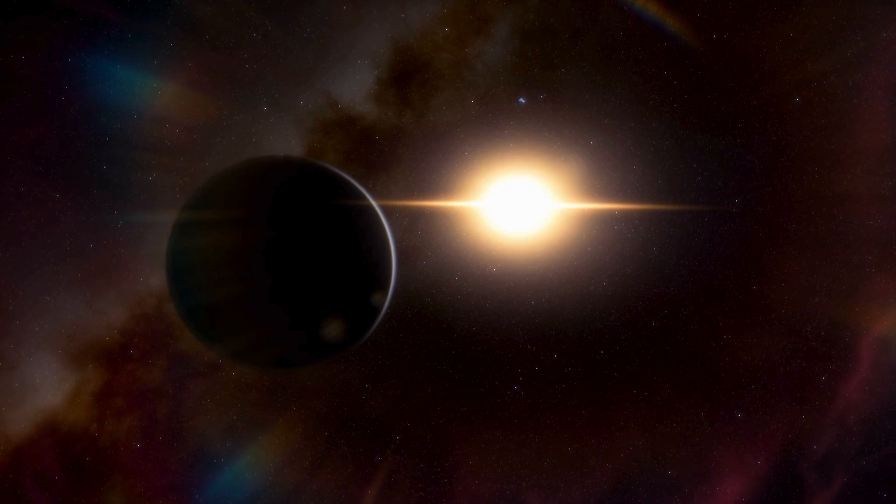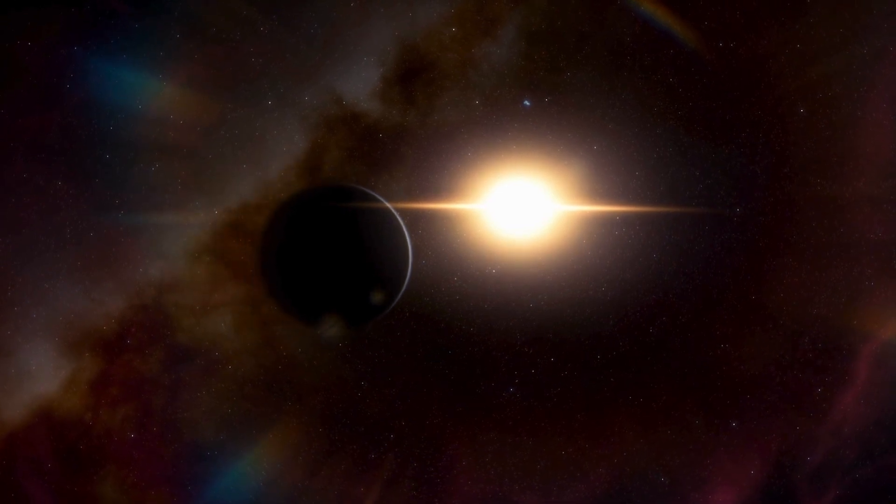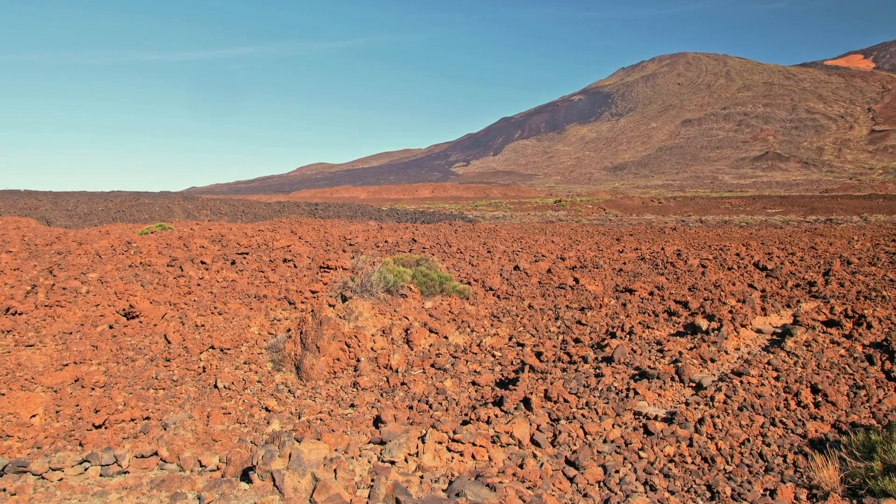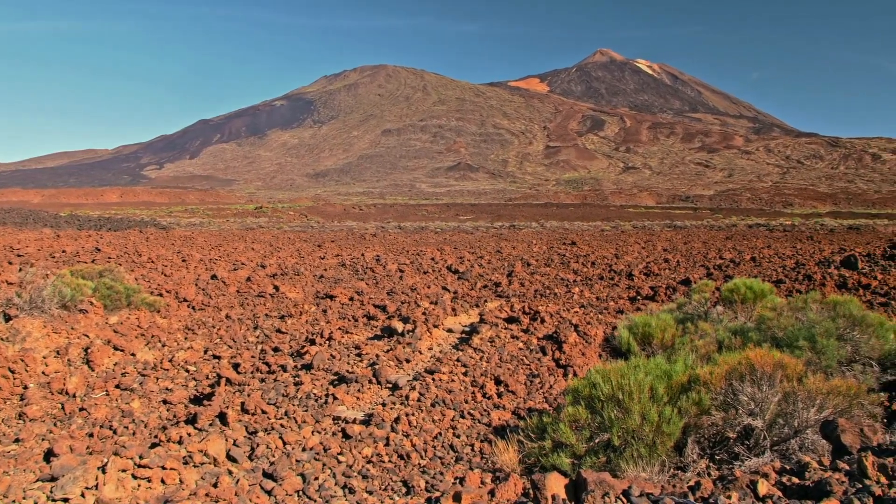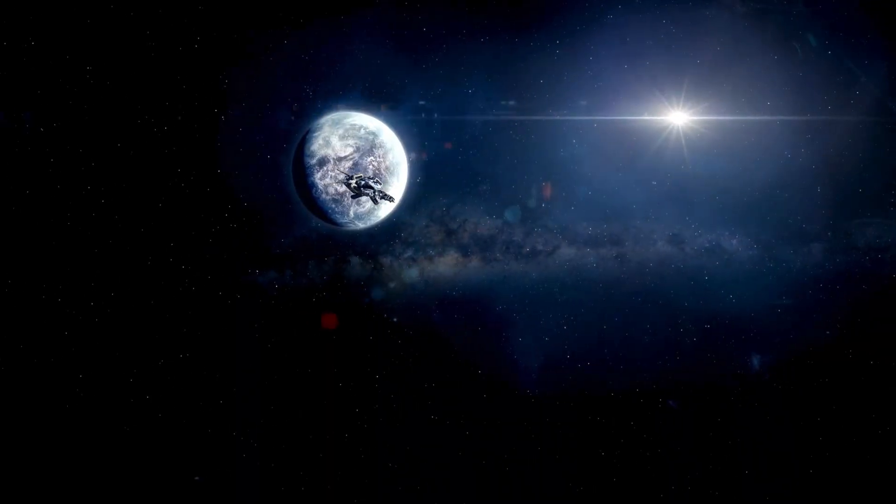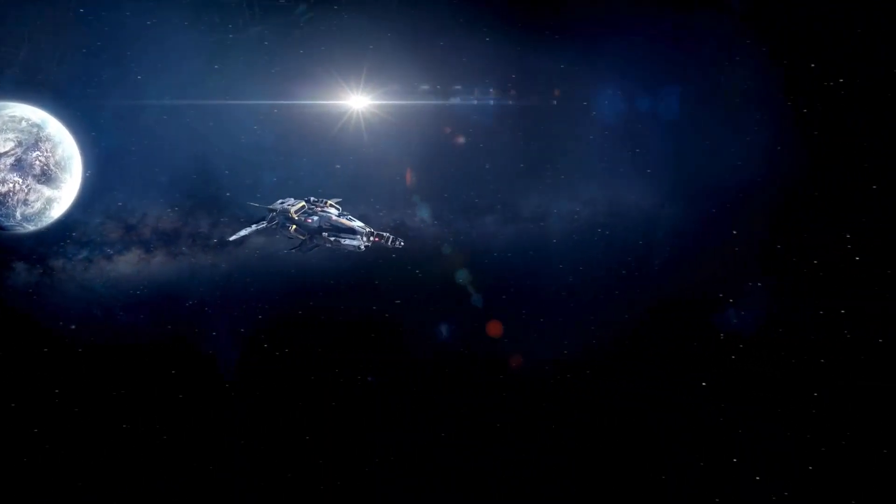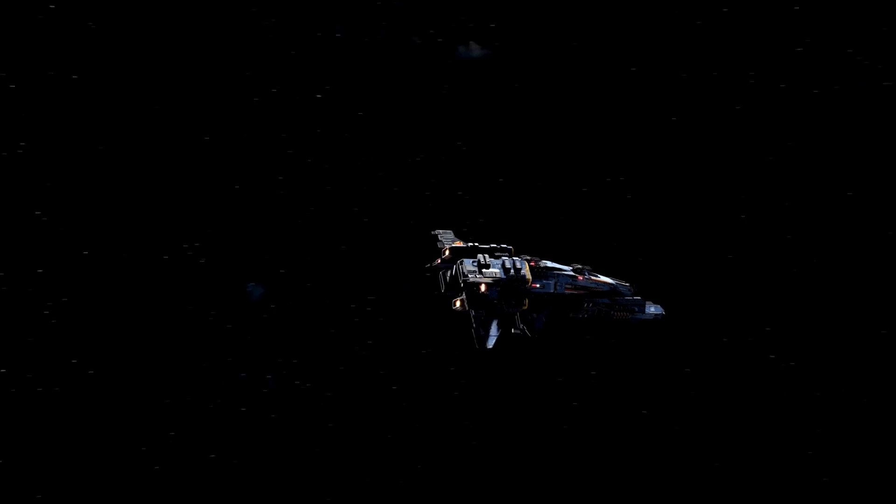As we venture beyond our own solar system, we discover a whole new world of exoplanets, planets that orbit stars other than the Sun. With 206 billion stars in the universe, the possibilities of exoplanets are endless. Some exoplanets even roam free, untethered to any star, like rogue travelers in space.